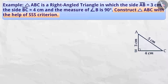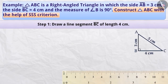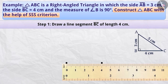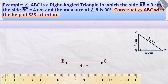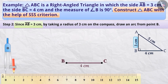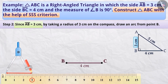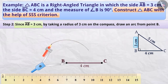Now we can construct triangle ABC. Step 1: First of all, with the help of a scale, we will draw a line segment BC of length 4 cm. Step 2: Since the length of the side AB is 3 cm, point B is at a distance of 3 cm from point A. So we will measure 3 cm with the help of a compass and, taking point B as the center, we will draw an arc.